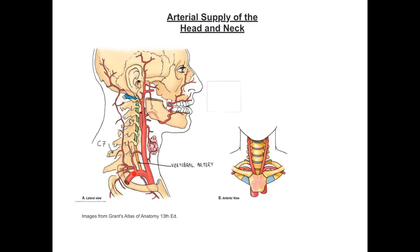The second branch of the subclavian to note is the thyrocervical trunk. While this gives a number of branches, the one of particular importance is the inferior thyroid artery, which takes a quite tortuous course to reach the inferior part of the thyroid gland. As well as supplying arterial blood to the thyroid gland, it has an important relationship to a nerve known as the recurrent laryngeal nerve — a branch of the vagus nerve that is crucial in supplying motor and sensory innervation to structures of the larynx.